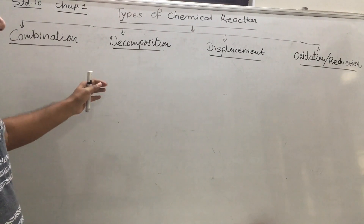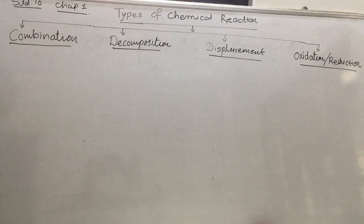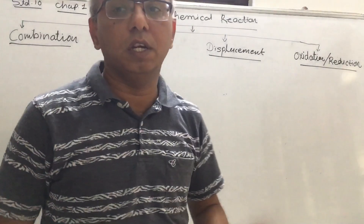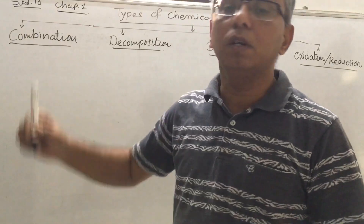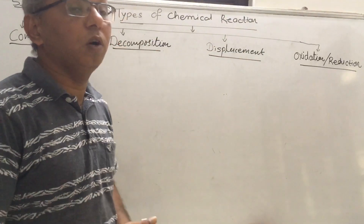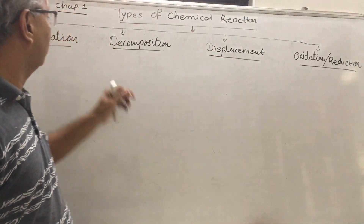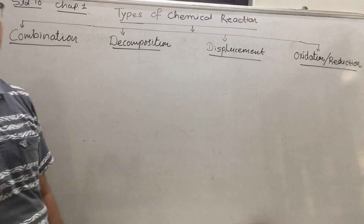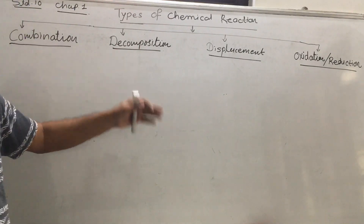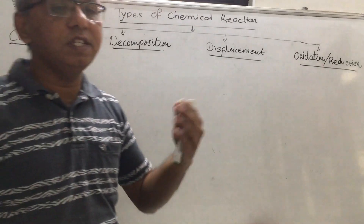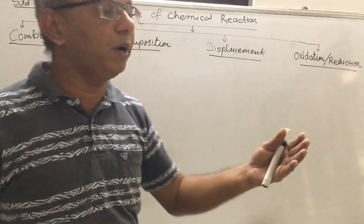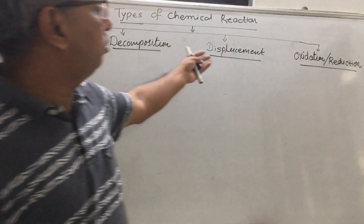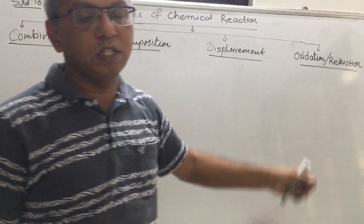First is combination reaction — when two or more than two components combine together and form one compound, it is called a combination reaction. Second is decomposition reaction — when one molecule is divided into two or more parts, it is called a decomposition reaction.